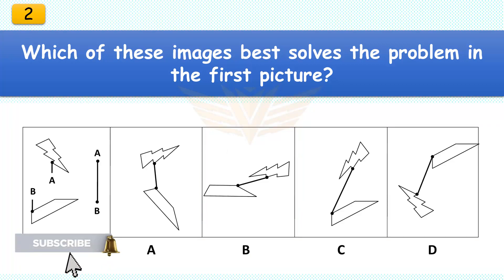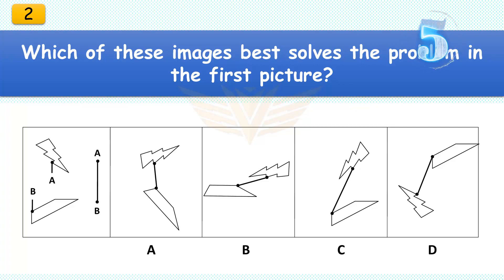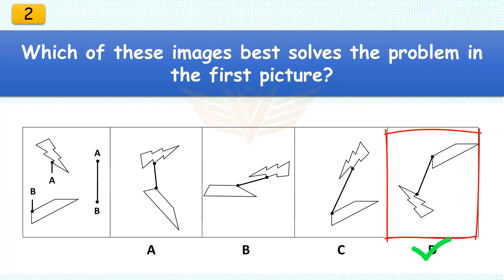Which of these images best solves the problem in the first picture? The correct answer is D. Rotate the lightning bolt 180 degrees and keep the boat as is. This is the only diagram that shows the exact spot on the lightning bolt being attached to the exact spot shown on the boat in the direction/example picture.